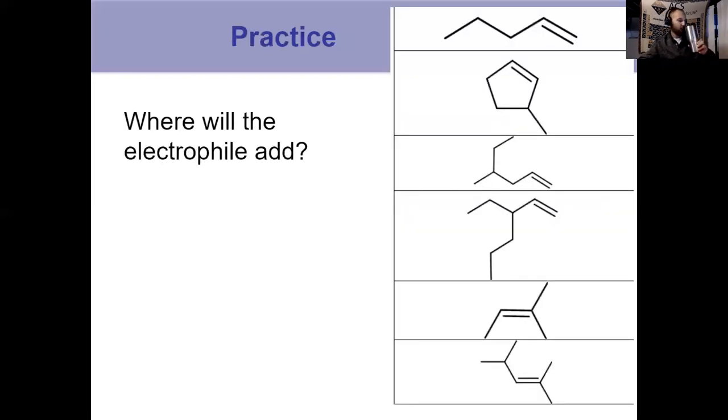One quick slide for practice. Look at these. Count the carbons. None of these are ambiguous situations. And figure out where the electrophile would add.